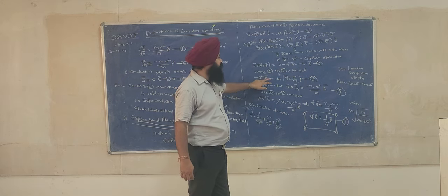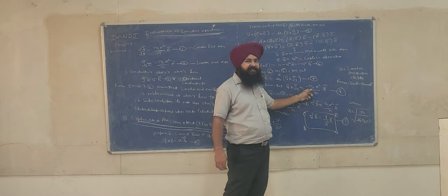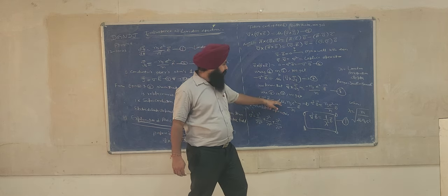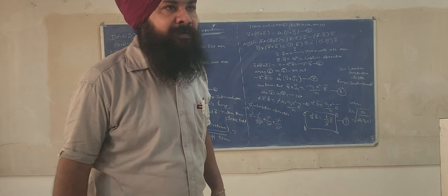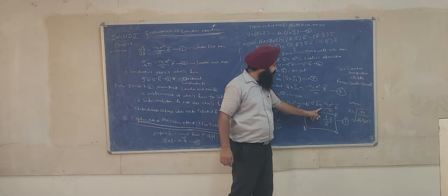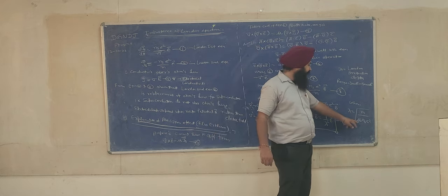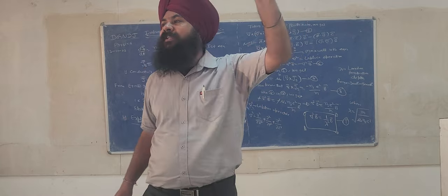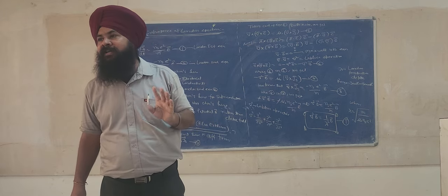We write ∇²B = (1/λ²)·B, where the constant 1/λ² = μ₀nse²/m, so λ = √(m / μ₀nse²). This λ is called the London Penetration Depth. 'Explain London Penetration Depth' is a two-mark question. This is the three-dimensional differential equation.